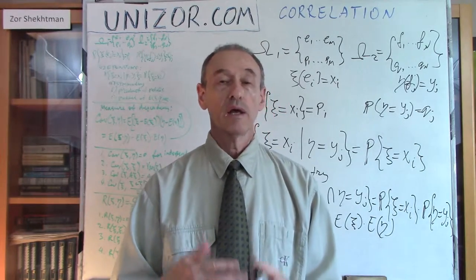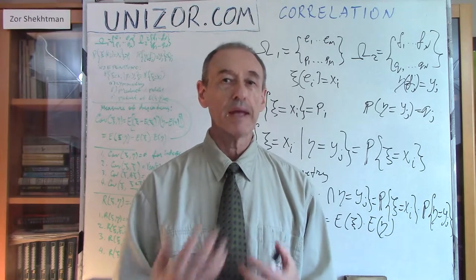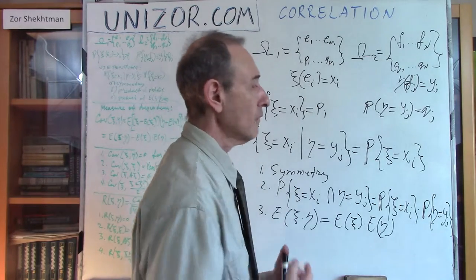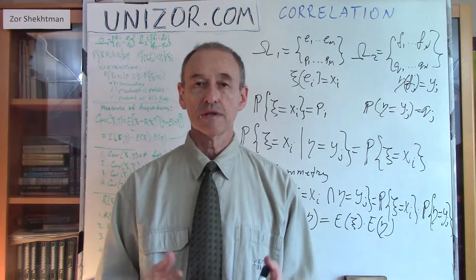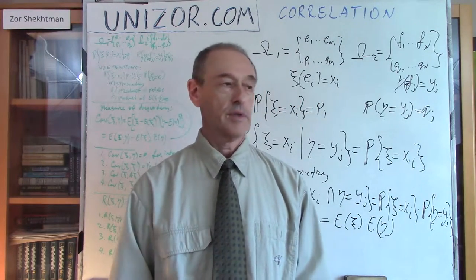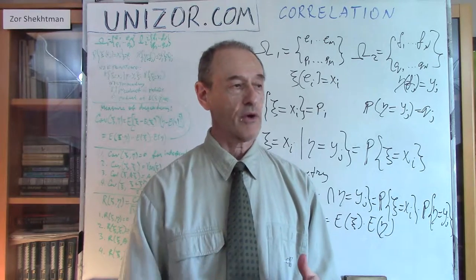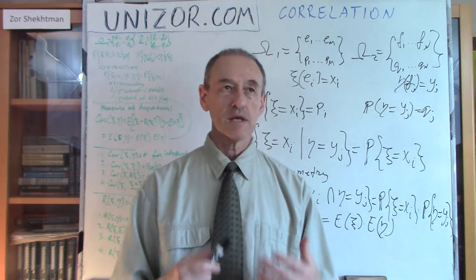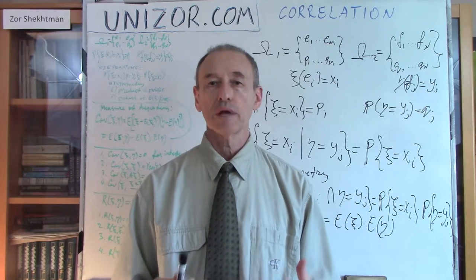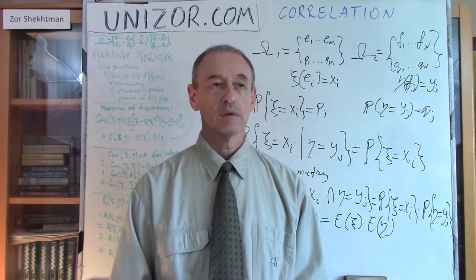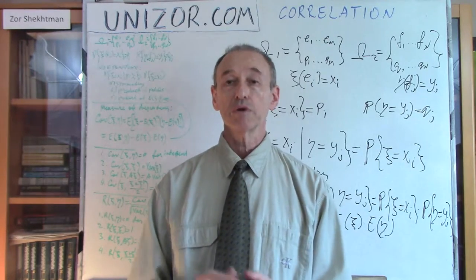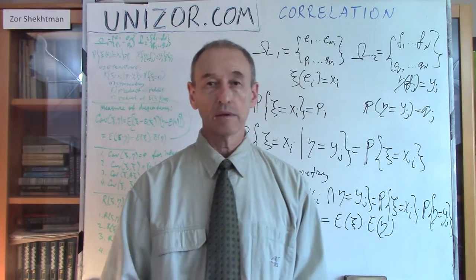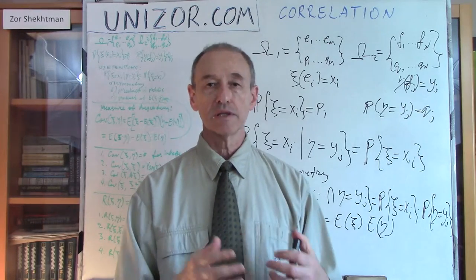But I was talking about what if it's not independent — how can we measure the dependency between these two variables if independence does not hold? The whole lecture is about introducing this measure. It's a number, basically. I will introduce it in two steps: first I will talk about covariance, and then about correlation. My purpose is to establish a numerical characteristic which will be equal to zero for independent variables.